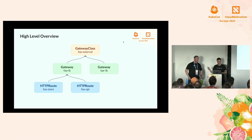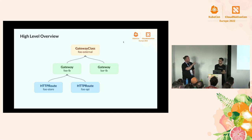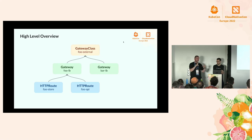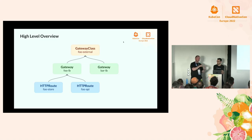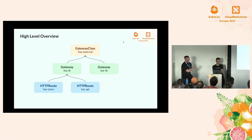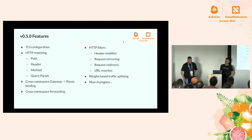An important distinction: HTTP route is for terminated HTTP traffic. TLS route is for passthrough TLS. TCP and UDP are for proxying TCP and UDP traffic — not routing, proxying. The distinction is important.